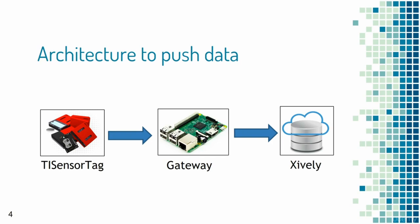The architecture for pushing data from a sensor to the Xifli cloud platform works as follows: first, we get data from a Texas Instruments (TI) sensor tag — an embedded device communicating over Bluetooth Low Energy (BLE) — which has multiple sensors including pressure, temperature, optical, and humidity sensors. The data is sent from the TI sensor tag to a gateway device over BLE, which then pushes it to the Xifli cloud platform over the internet using the HTTP REST API.